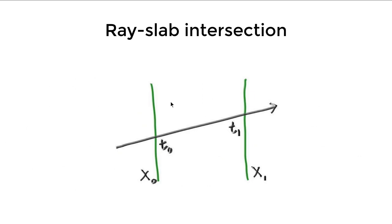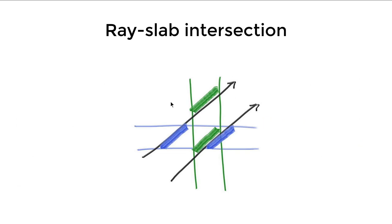When we check whether a ray intersects with a bounding box, what we do is called slab intersection, because we need to check each dimension individually. When we do this slab intersection we get two intersection points, and with those two intersection points we can get the overall intersection point in space.